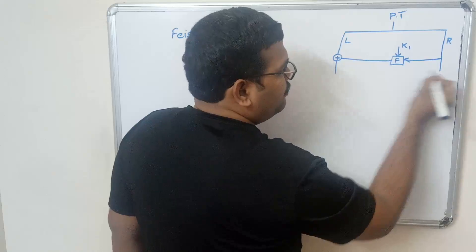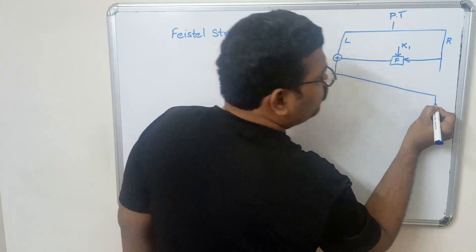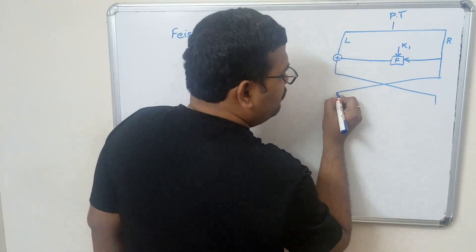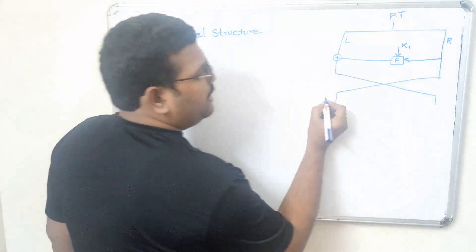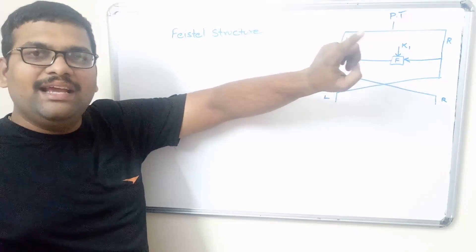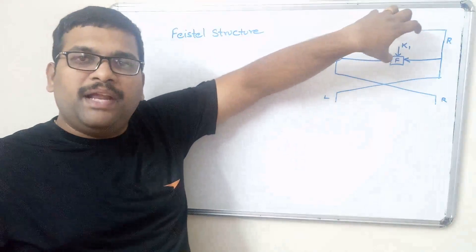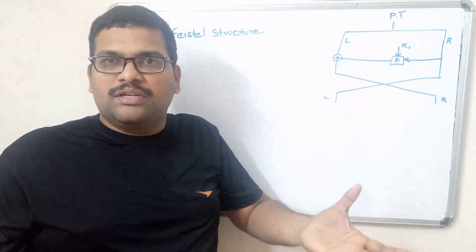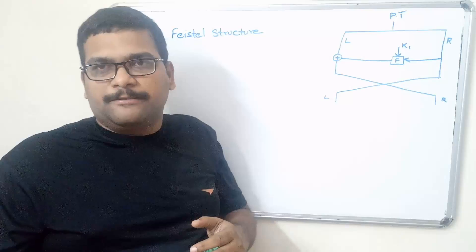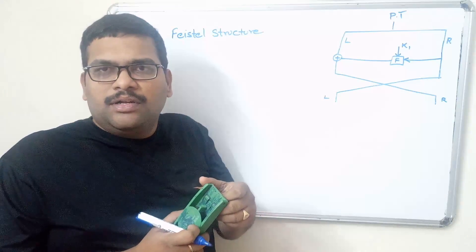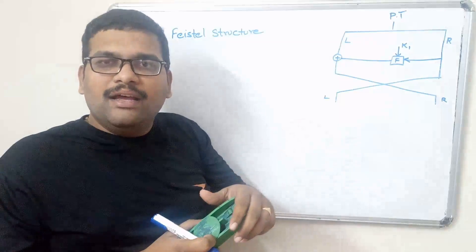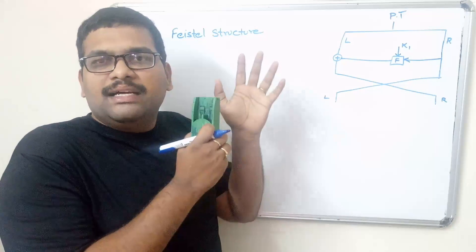The output from the function is XORed with the left half, and the output from this will be swapped — the left half will be stored in the rightmost bits and the right half will be saved in the leftmost bits. This single process we call a round, and the conversion of plaintext to ciphertext is done in a number of rounds. How many rounds to apply depends upon the algorithm. Any algorithm following this structure we call a Feistel structure.